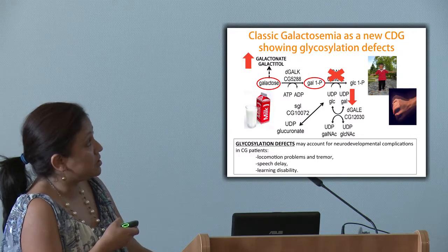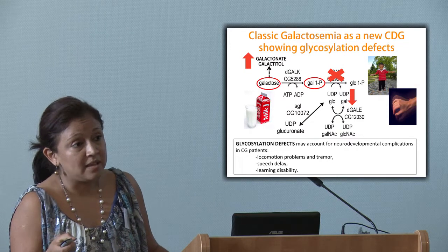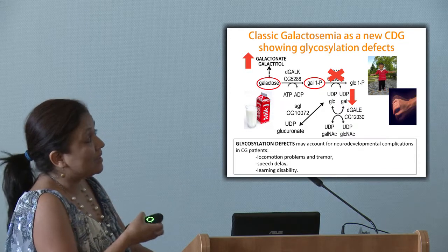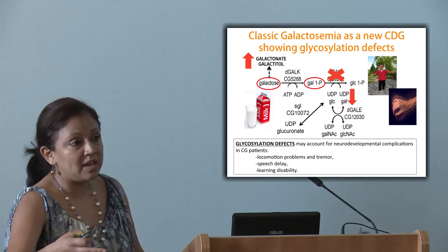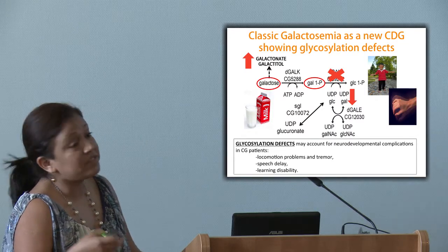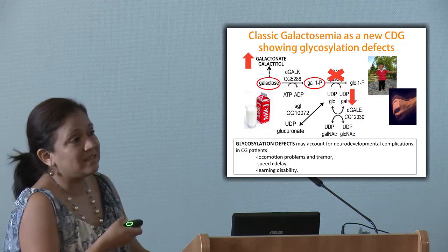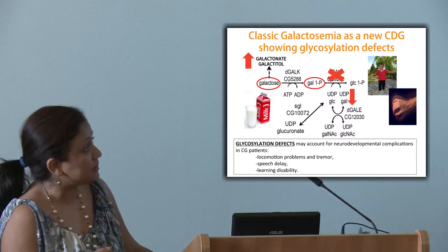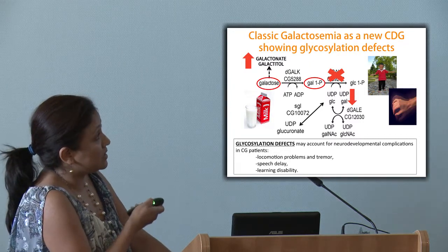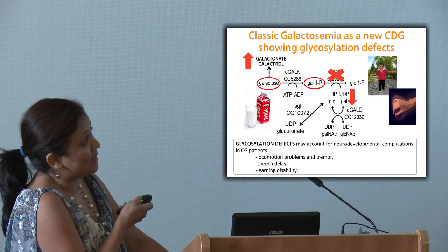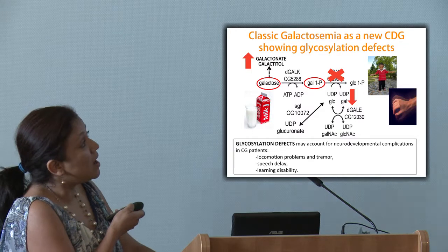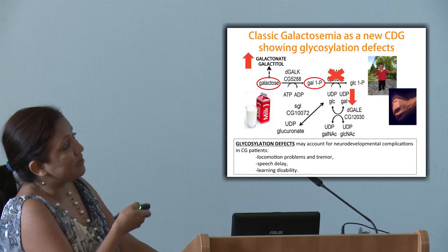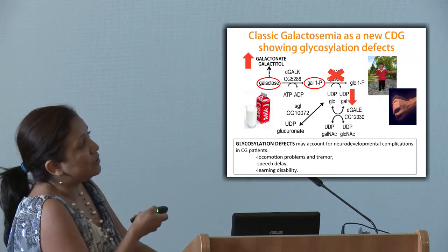The current standard of care is to remove or restrict galactose from the patients' diet. Despite this, although neonates survive the neonatal phase, patients develop — with time — locomotion impairments, tremors, ataxia, and learning disabilities. Eighty percent of females cannot have children. One important aspect to highlight is that because this enzyme is absent, there is also a shortage in the UDP galactose pools, which impacts the other UDP sugars because the balance is lost.